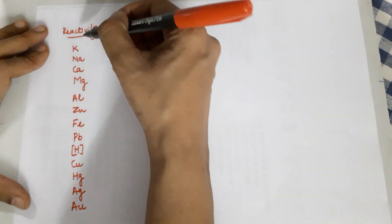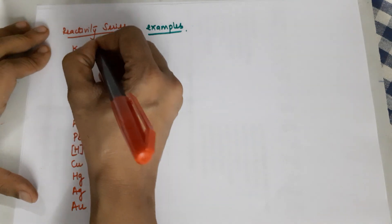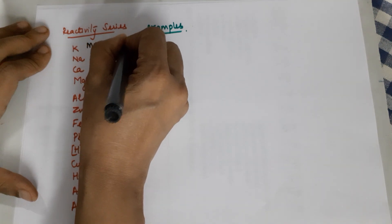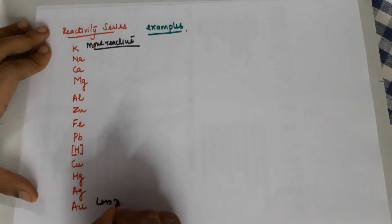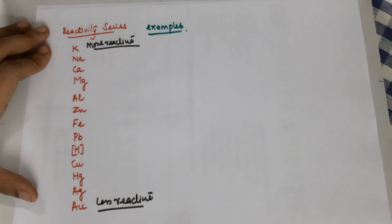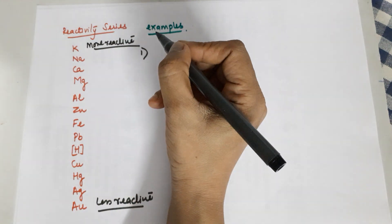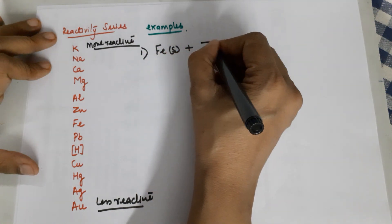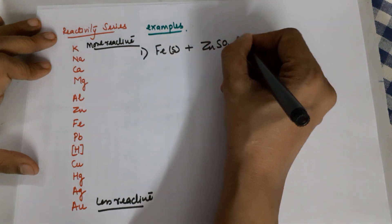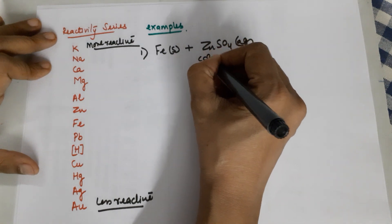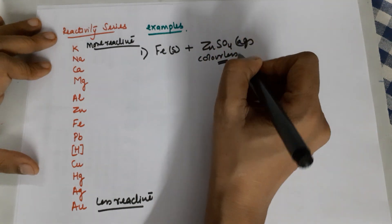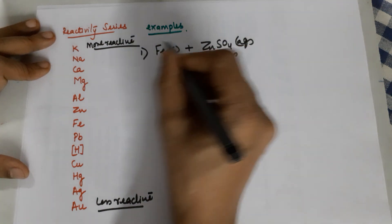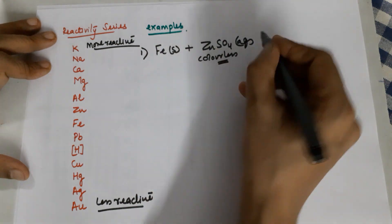I have deliberately written the reactivity series for your convenience. The top of the reactivity series are the more reactive metals and the lower end is the less reactive metals. Let us begin with example number 1: I take an iron metal piece and add it to zinc sulfate aqueous. This is a colorless solution — salt solutions are colored only if they are of iron and copper. Will the reaction happen when iron is added to zinc sulfate?